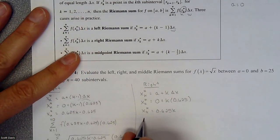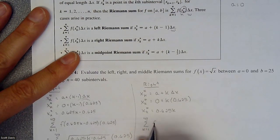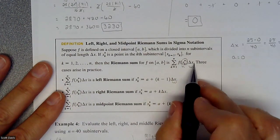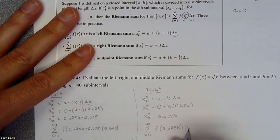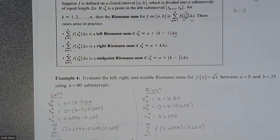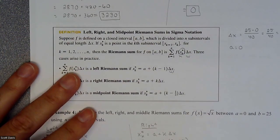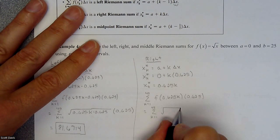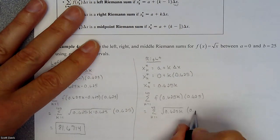This one is pretty nice because our a value starts at 0. Our k is our variable and our width is 0.625. So this x_k* value equals 0.625k. Now we go into our summation from k equals 1 to 40, doing f of 0.625k times our width.